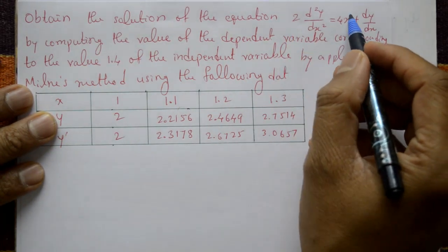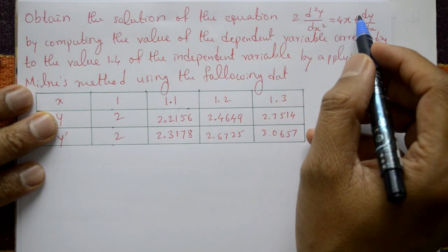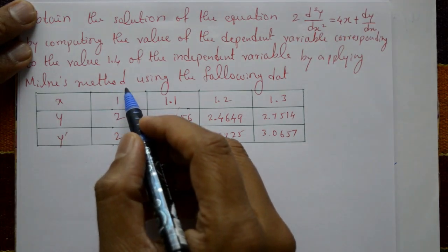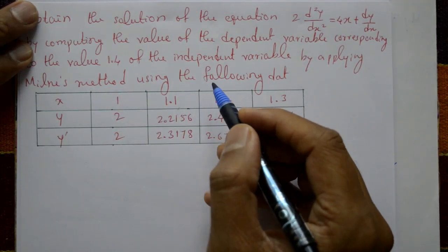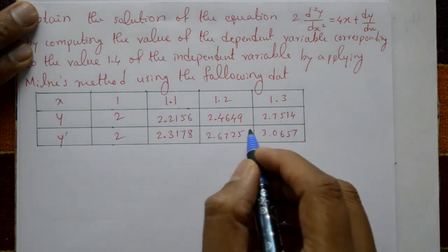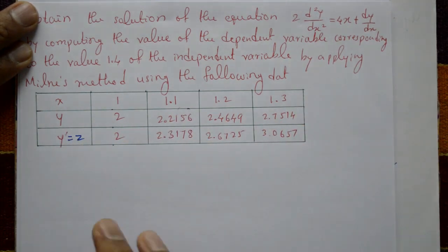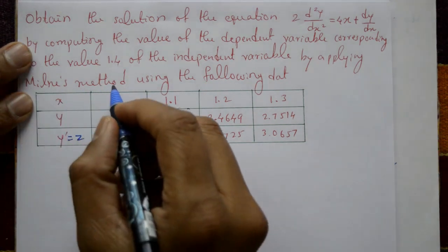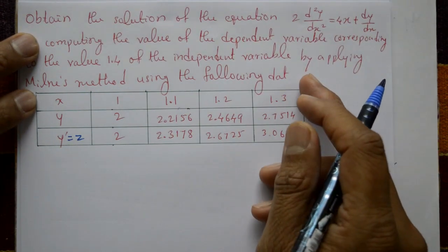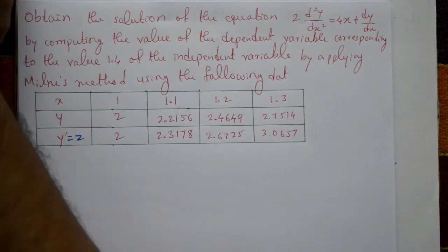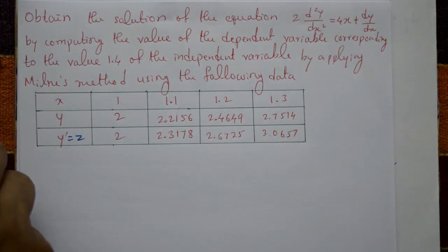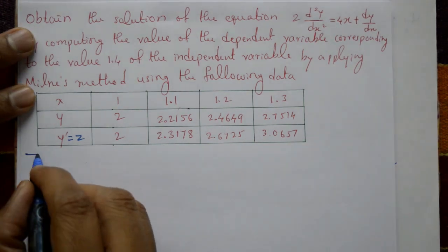We obtain the solution of this second order differential equation by applying Milne's method. The corrector formula uses x values, y values, y dash values — where y dash means z values. In Milne's method, both the predictor and corrector formulas are applied. This is a second order differential equation.